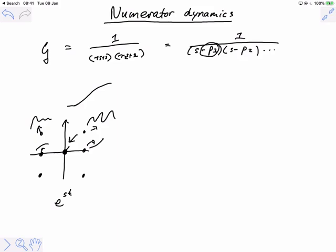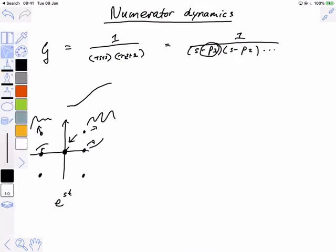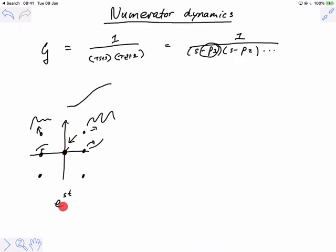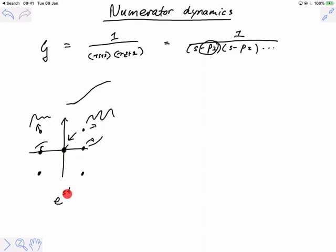If I have a value of s which is over there, we know that e to the st just resembles a constant, e to the 0, and the step, that's what the impulse response looks like. The impulse response looks like this, and then these step responses look like the integral of those impulse responses.